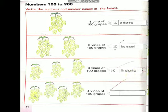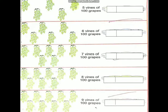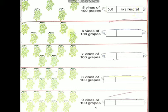Come to the next one. 4 vines of 100 grapes — each vine has 100 grapes — so 4 into 100 is 400. Write the number 400 and its number name. Next, 5 vines of 100 grapes — 5 into 100 is 500. Number name: F-I-V-E H-U-N-D-R-E-D. Write 500. Next, 6 vines of 100 grapes — each vine contains 100 grapes — so 6 into 100 is 600. Write 600 and its number name.